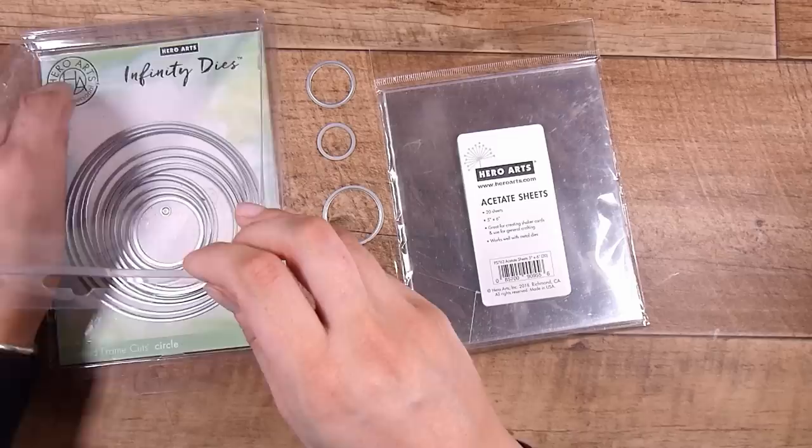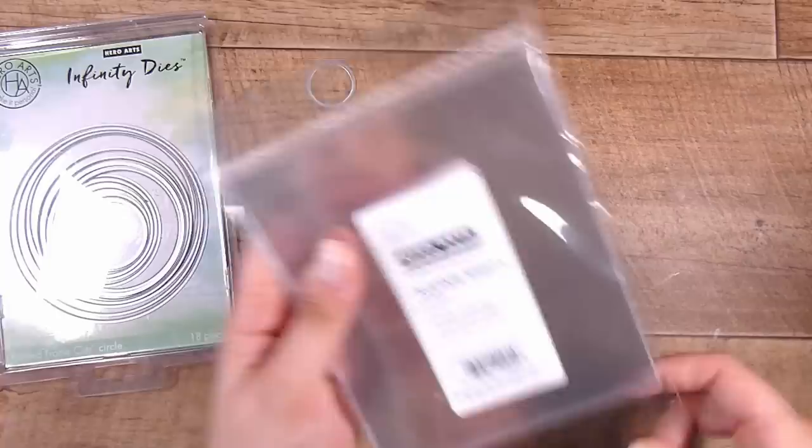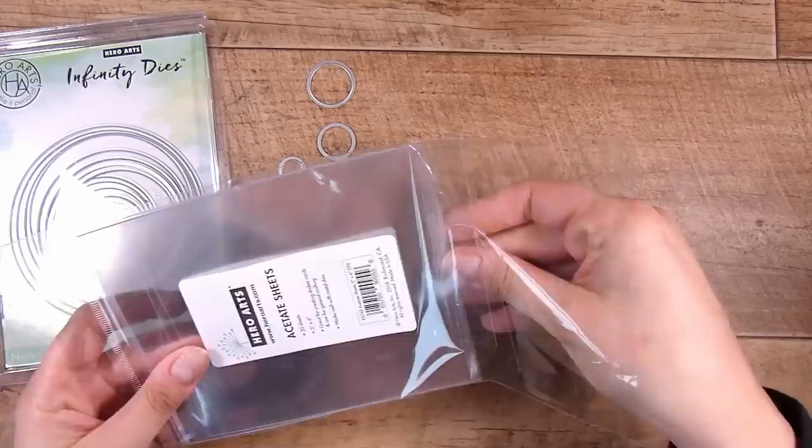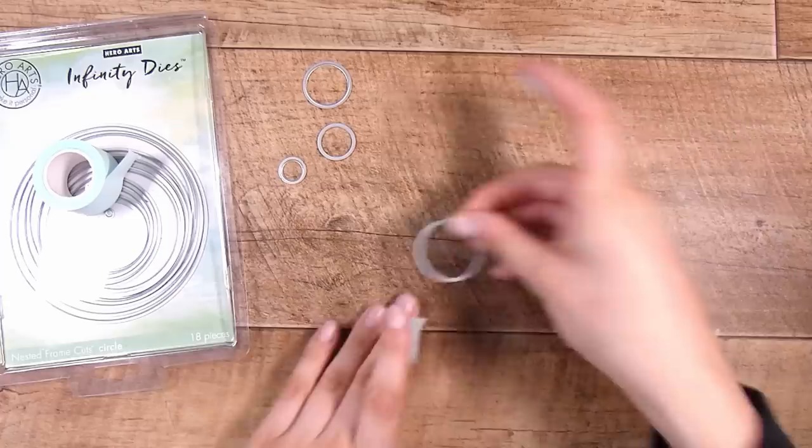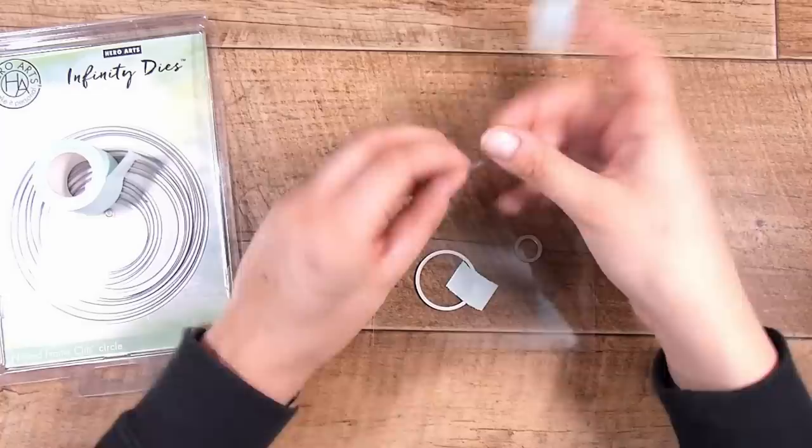I'm using the Hero Arts infinity circle die sets and I'm just taking out three or four of kind of the smaller circles. You can obviously make these whatever size you wish. If you have punches then of course you could just quickly punch these out. But I'm going to be using a sheet of acetate to create my own stencil, particularly so I can use it again. However, if you just wanted to cut this out of cardstock then that is going to work perfectly fine too.